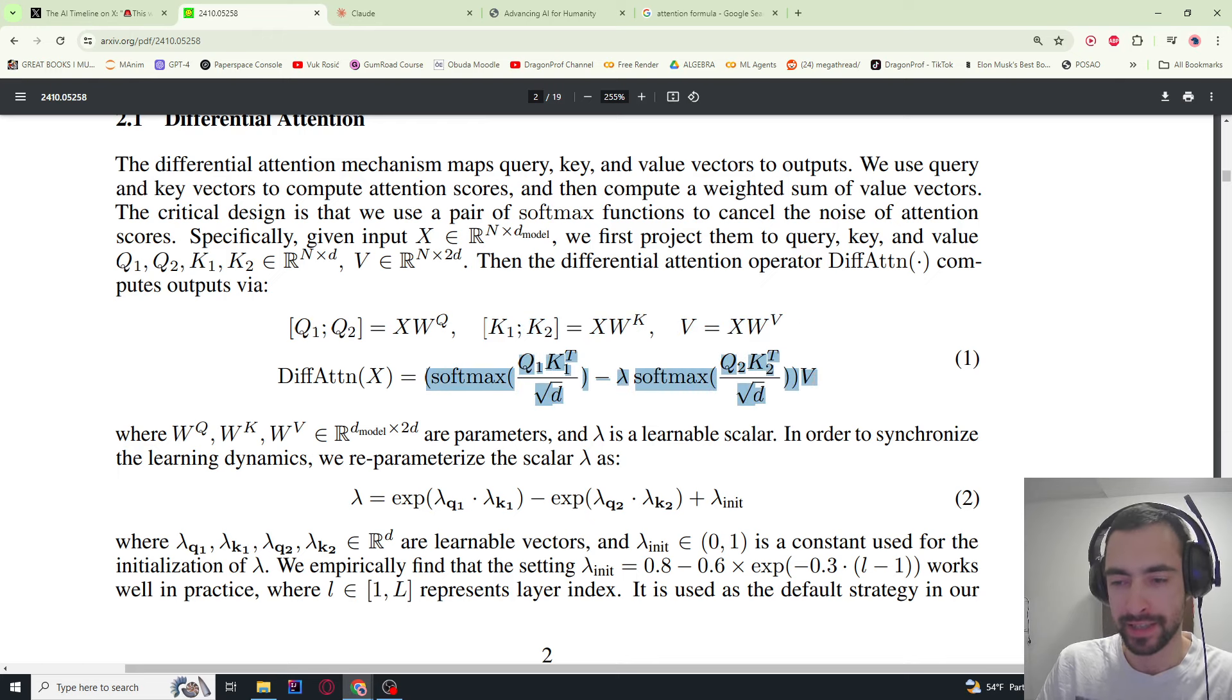Here we can see the main difference between the classic attention formula and this differential attention. The classic attention would be just this matrix, but then they also have this lambda, which is a learnable parameter that adjusts the strength of this part. So you subtract this, but this is a Q1, this is Q2, same goes for K. So this is the first set of matrices, second set of matrices, and the idea is that this should learn the noise. And then when you subtract the noise from this guy, and then you get like the most important things remain.